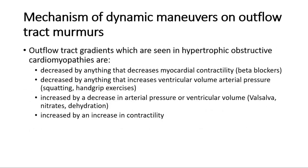For the mechanism of dynamic maneuvers on outflow tract murmurs, outflow tract gradients seen in hypertrophic obstructive cardiomyopathy are decreased by anything that decreases myocardial contractility, such as beta blockers, and decreased by anything that increases ventricular volume or arterial pressure, such as squatting and hand grip exercises. They are increased by a decrease in arterial pressure or ventricular volume, such as in Valsalva, nitrates, or dehydration, and increased by an increase in contractility.